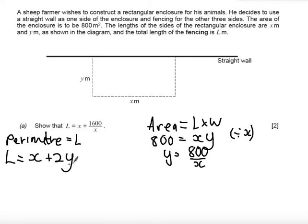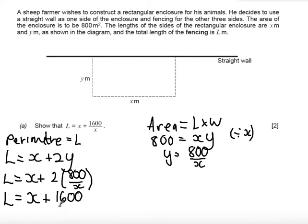So now instead of having y in my expression for the perimeter, I can replace that with 800 over x. So I get that l is x plus 2 lots of 800 over x. It's important that you show the substitution to make sure that your argument is convincing. So when I expand this out, I get l equals x plus 1600 over x as required.